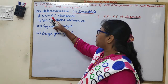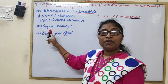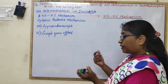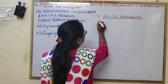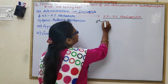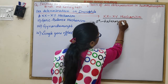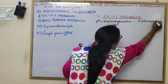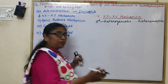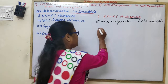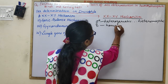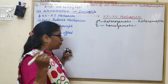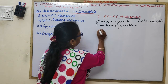Sex determination in Drosophila: here you have to explain the XX/XY mechanism, genic balance mechanism, gynandromorph, and single gene effect. In Drosophila, similarly, males are heterogametic because they have two heteromorphic sex chromosomes, and females are homogametic with homomorphic sex chromosomes, producing one type of gamete.